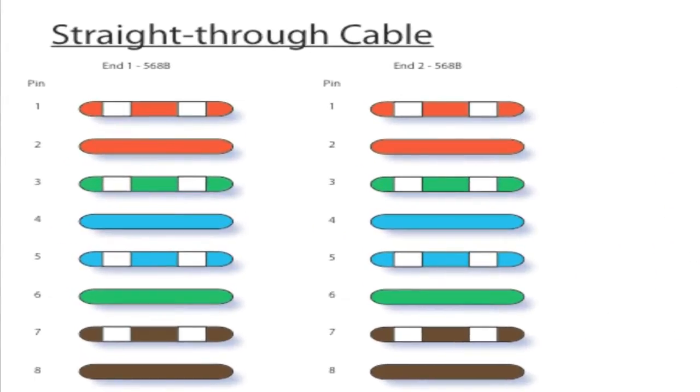With the straight-through cable, you can see that pin one lines up with the orange and white cable. Pin two lines up with the orange cable. Pin three, the green and white. Pin four, the blue. Pin five, the blue and white. Pin six, the green. Pin seven, the brown and white. And pin eight, the brown. We really only use pins one, two, three and six.